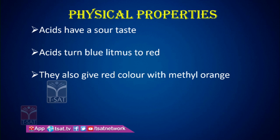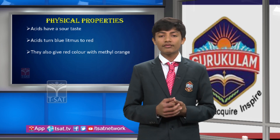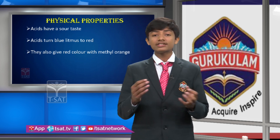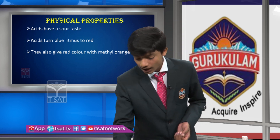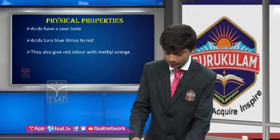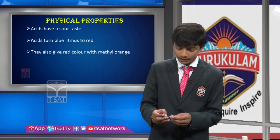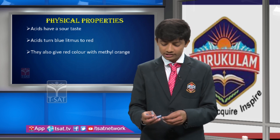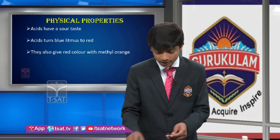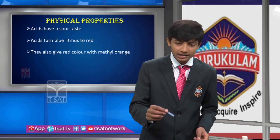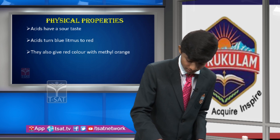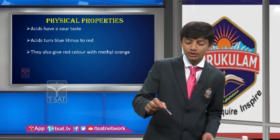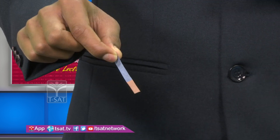Chemical properties of acids: acids are sour to taste. If we dip a blue litmus paper in hydrochloric acid, it turns into a red color. If it turns red, it is an acid; if it turns blue, it is a base. Since the blue litmus paper turns red, we know the substance is an acid.